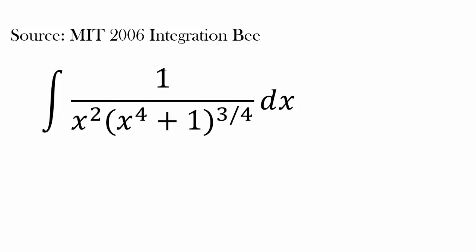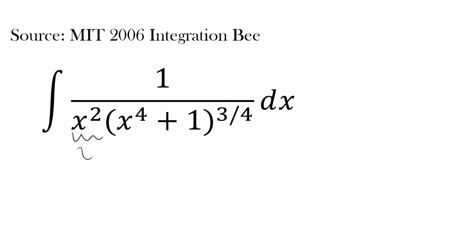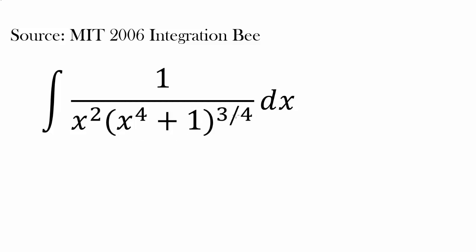We have the integral of 1 over x squared times (x to the fourth plus 1) to the three-fourths power. Now, if this was x cubed, we could figure this out immediately — let u equal x to the fourth plus one, and du would be 4x cubed. But it's not x cubed, it's x squared. Moreover, this (x to the fourth plus 1) term is being raised to the three-fourths power, which is very annoying. So how can we even start this?